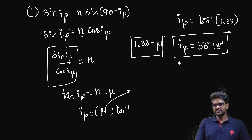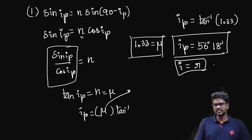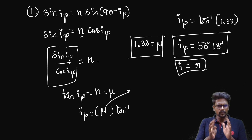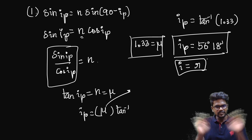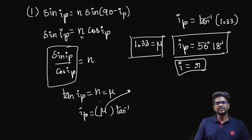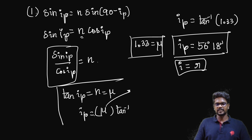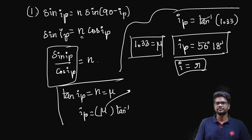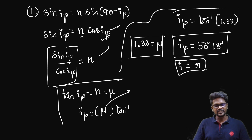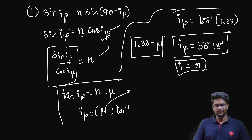The incident angle equals the polarizing angle. By the law of reflection, the reflection angle R equals IP as well. This is a very simple problem. You can directly start with the step: tan IP equals mu, so IP equals tan inverse of mu. I hope this is clear. Thank you, help others with a smile.